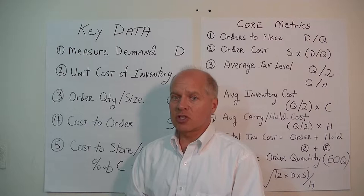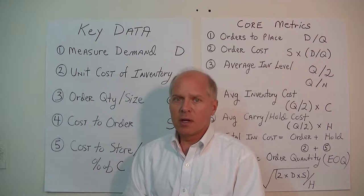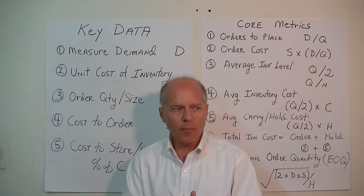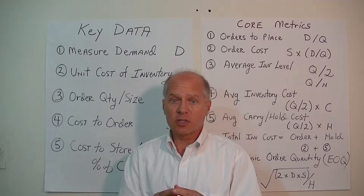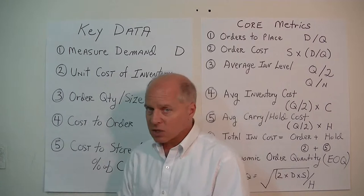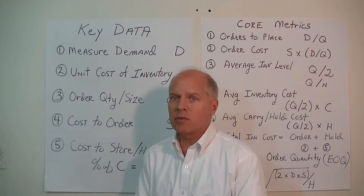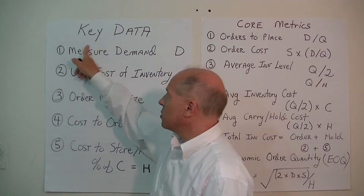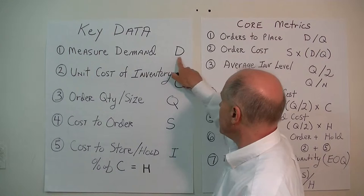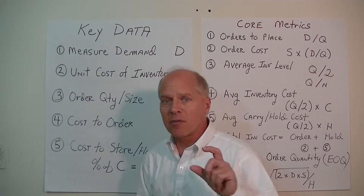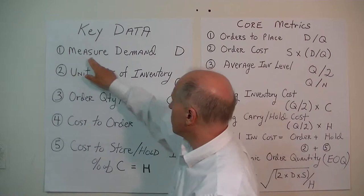Assuming you have a good automated system, you want to measure certain data points. The first data point you absolutely need to know for every product you sell is demand. This is a demand-driven model — we're pulling based on demand, not supply-driven. We don't want to keep building up inventory that never sells. So we must measure the annual demand for each product, and we'll label that as D.